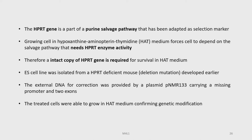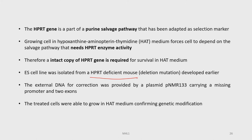Growing cells in a hypoxanthine-aminopterin-thymidine medium, or HAT medium, forces the cell to depend on the salvage pathway and requires HPRT enzymatic activity. Therefore, an intact copy of the HPRT gene is required for survival in the HAT medium, meaning HPRT-negative genotypes will not be able to survive. An embryonic stem cell line was isolated from an HPRT-deficient mouse with a deletion mutation. The external DNA for correction was provided by a plasmid pNMR133 carrying a missing promoter and two exons. Treated cells were able to grow in HAT medium, confirming the genetic modification.